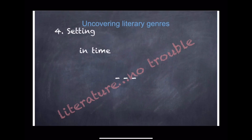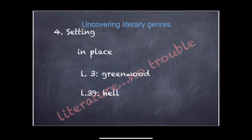As for the setting in time, the poem is set in an undefined time. However, the use of archaic words and the focus on hunting suggest it could be set in the Middle Ages. The setting in place is as vague as the setting in time. The only words connected to the setting are 'greenwood' and 'hell.'